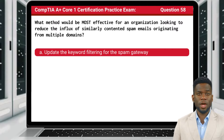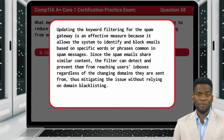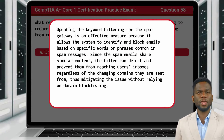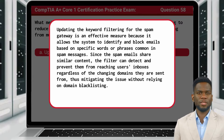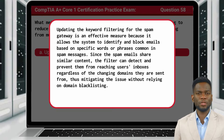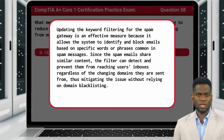The answer is A: Update the keyword filtering for the spam gateway. Updating the keyword filtering for the spam gateway is an effective measure because it allows the system to identify and block emails based on specific words or phrases common in spam messages. Since the spam emails share similar content, the filter can detect and prevent them from reaching users' inboxes regardless of the changing domains they are sent from, thus mitigating the issue without relying on domain blacklisting.